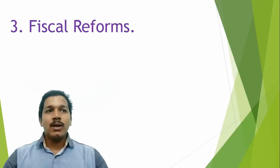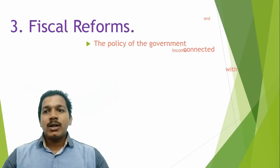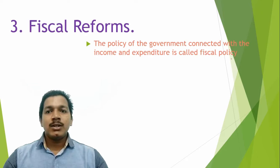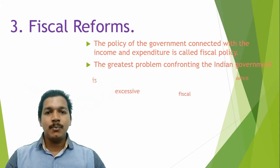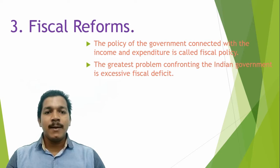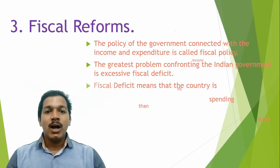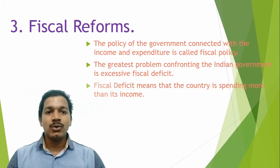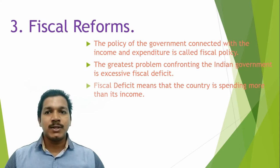The third step is called fiscal reforms. The policy of the government connected with income and expenditure is called the fiscal policy — that is, how much income will be there and how much expenditure will be there. This is called the fiscal policy, and a lot of changes have been made in it.